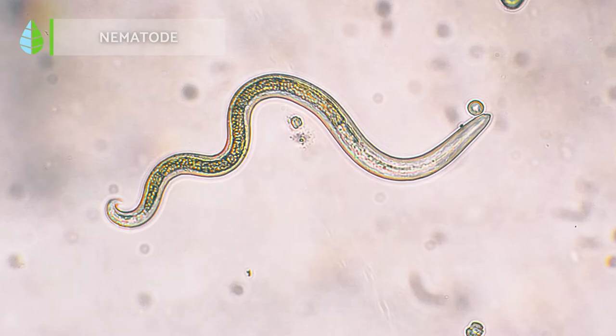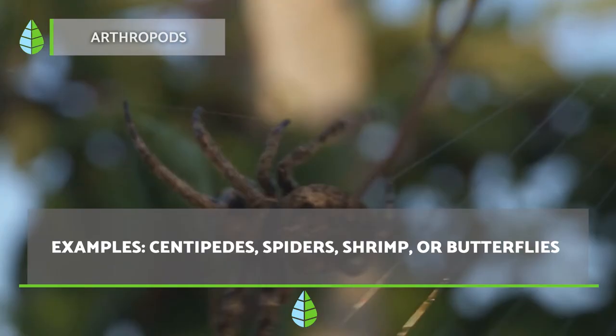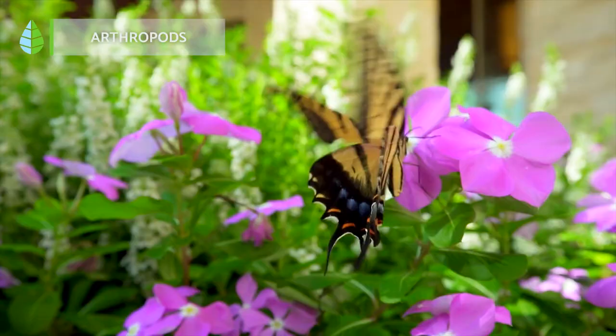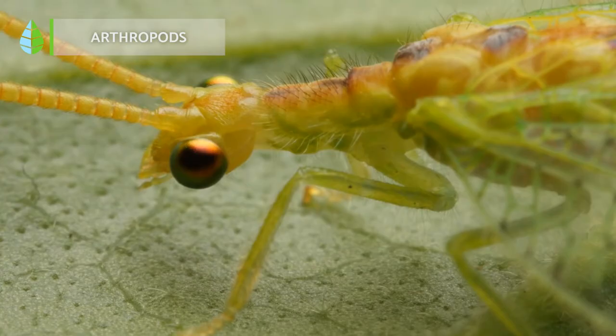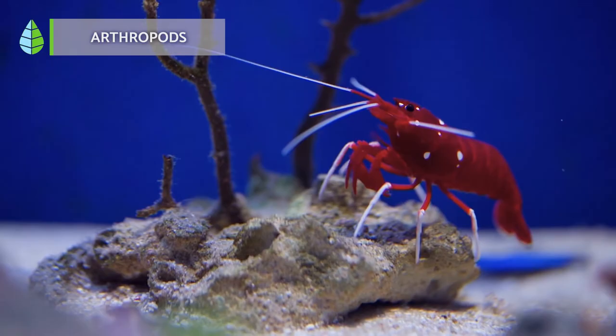Arthropods: it is the most diverse and heterogeneous group of boneless animals. In fact, 80% of invertebrates belong to this group. They have a very complex body structure with a chitinous exoskeleton divided into legs, antennae, and mouthparts. Their exoskeleton is shed as they grow by molting, resulting in a new one. This process is repeated several times throughout their lives.